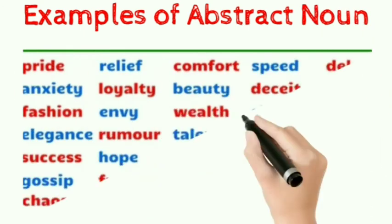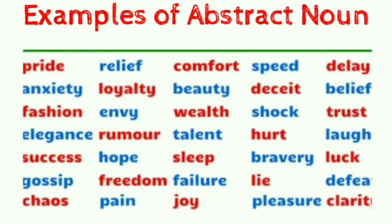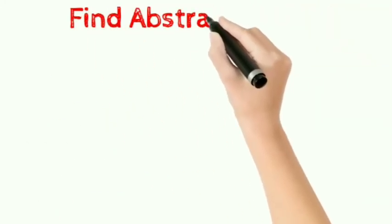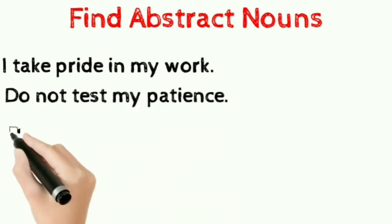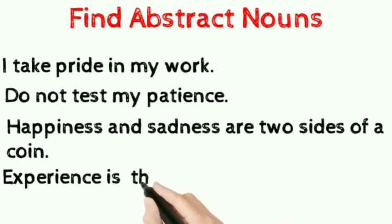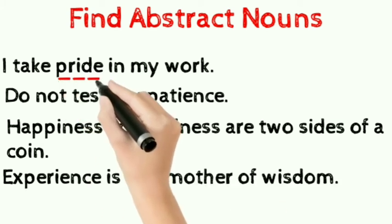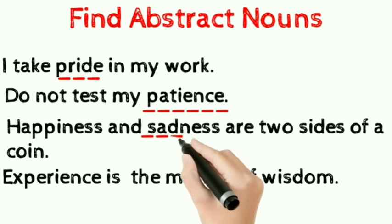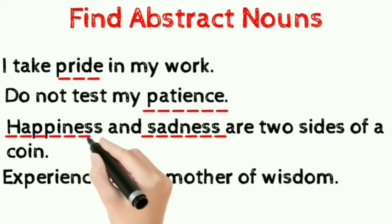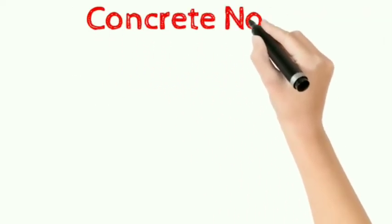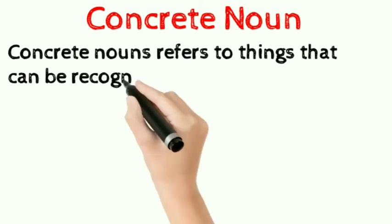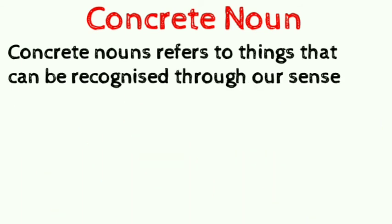Here you have a task — identify the abstract nouns from the sentences. First: 'I take pride in my work.' Second: 'Do not test my patience.' Third: 'Happiness and sadness are two sides of a coin.' Fourth: 'Experience is the mother of wisdom.' The answers are: pride, patience, happiness, sadness, and wisdom — we can't detect any of these through our five senses.